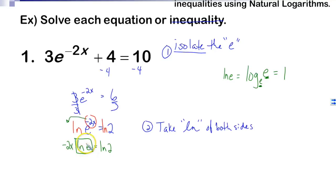This ln of e just ends up being one. So we have negative 2x equals ln of 2. That's why we took the ln and not the common log. Then we're going to divide by negative 2. Our answer is going to be x equals ln of 2 over negative 2.